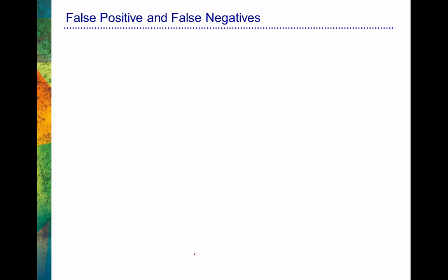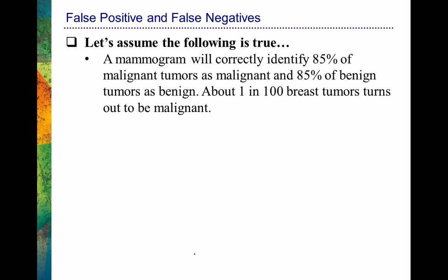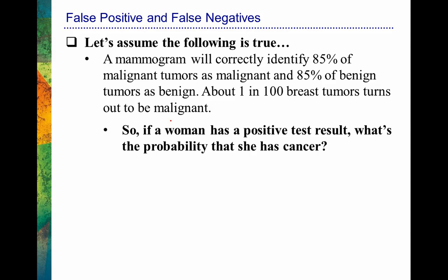When we have a sense of what the false positive rate is and what the false negative rate is, we can answer some pretty interesting questions about the test. Let's assume the following using easy numbers: a mammogram will correctly identify 85% of malignant tumors as malignant and 85% of benign tumors as benign. So 85% of the time it will correctly tell us a non-cancerous tumor is non-cancerous. And let's assume that about one in 100 breast tumors turns out to be malignant.